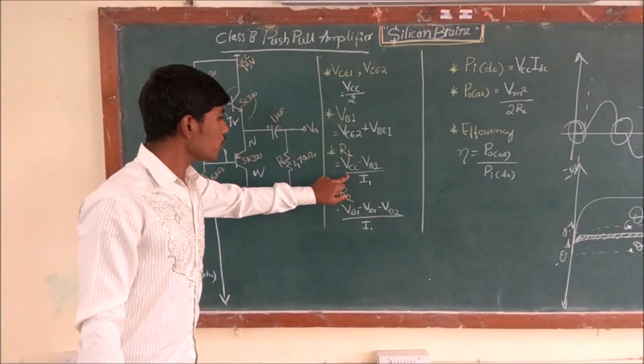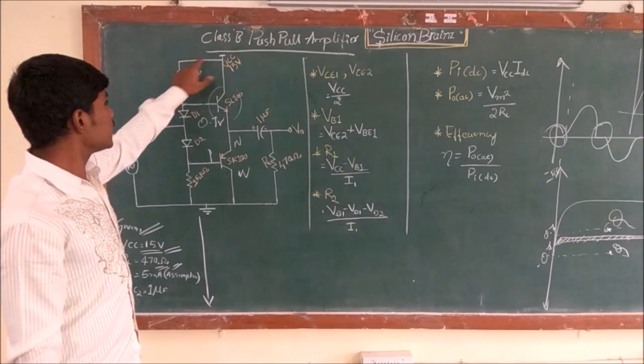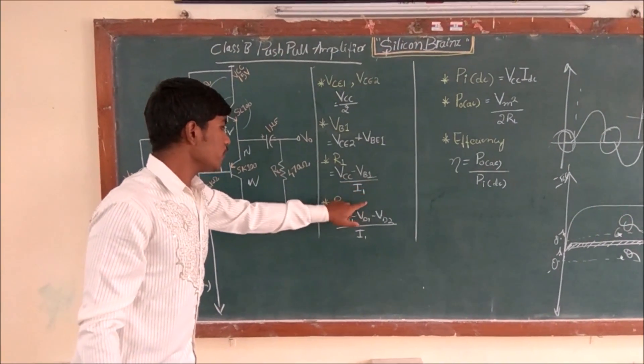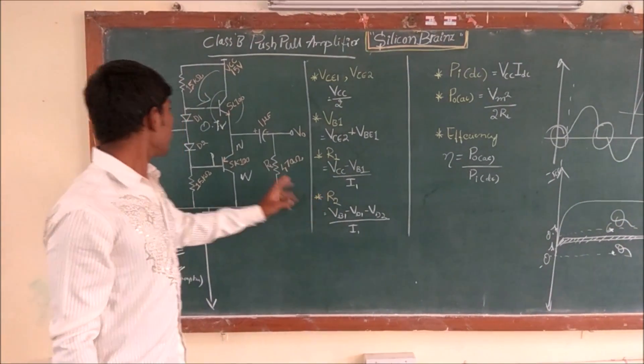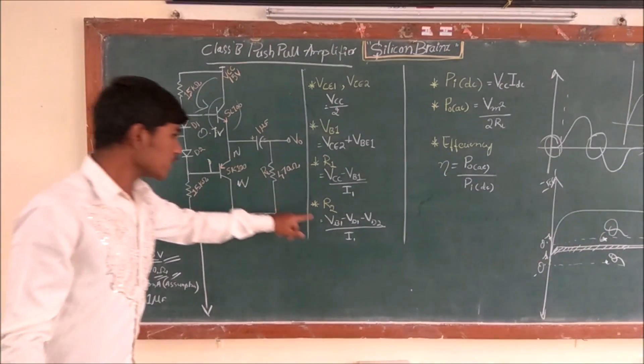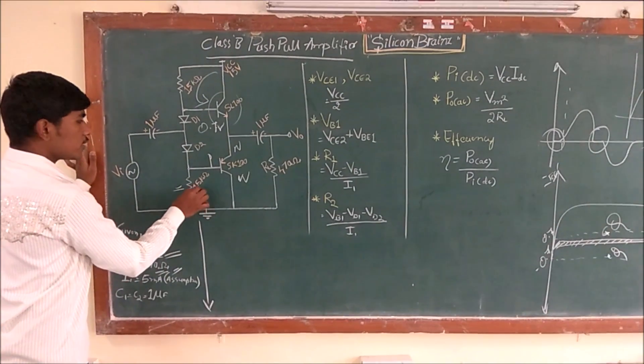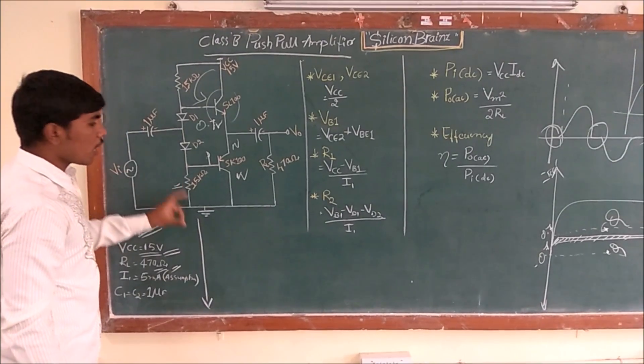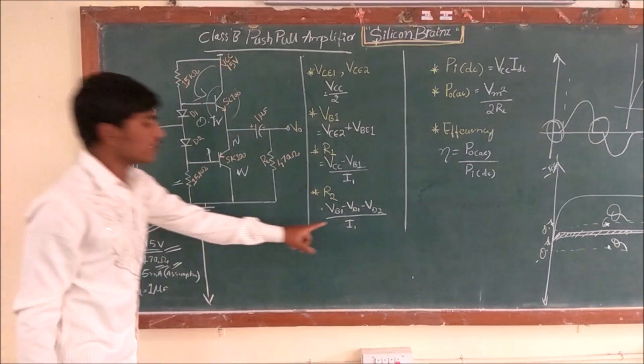That's VBE1, this voltage equals to VCE2 plus VBE1. This gives you R1 is equal to, for this region, VCC minus VBE1 divided by I1. So we will get R1 is 1.5 kilohms.